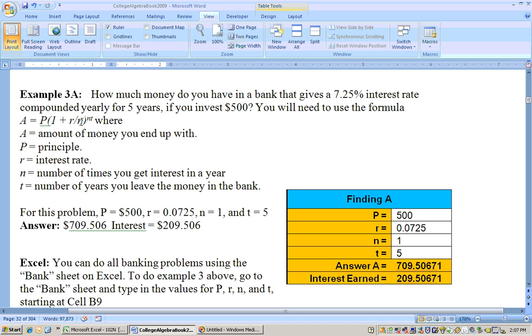If it's quarterly, you're getting interest 4 times a year, so the N would be 4. And if it's monthly, it would be 12. And if it's daily, the N would be 365. And T is the number of years you leave the money in the bank.